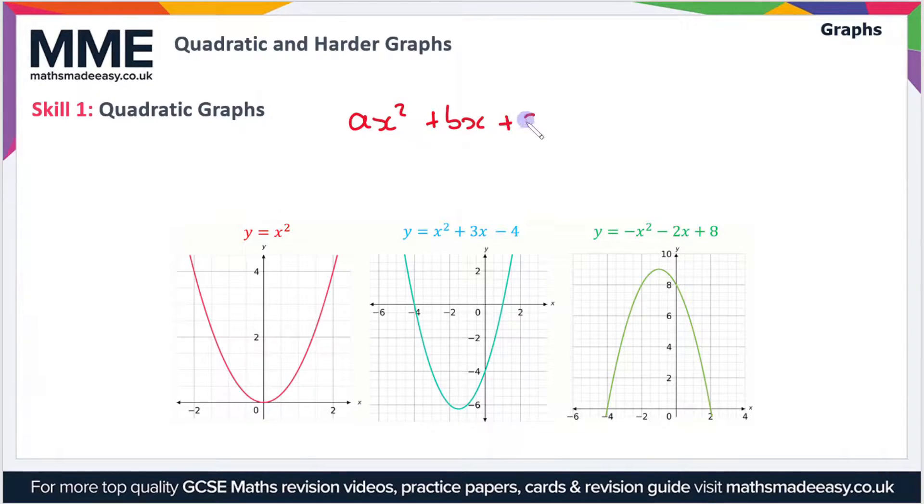Now a, b, and c can be any number, including zero. So sometimes you'll just see a graph such as the one on the left here, y = x². In that case, b and c are zero and a equals one, so the expression just becomes y = x².